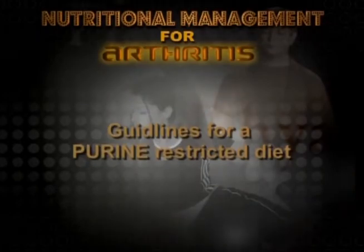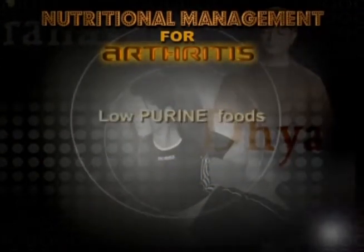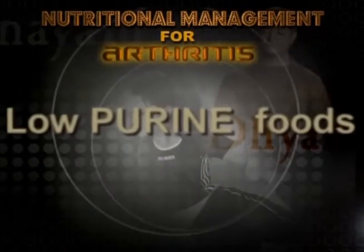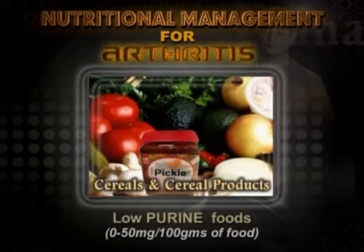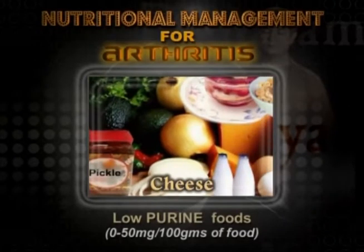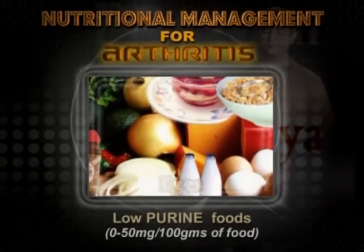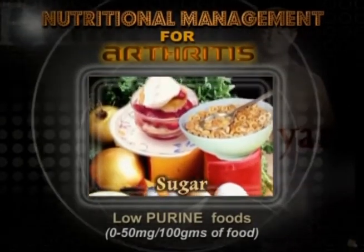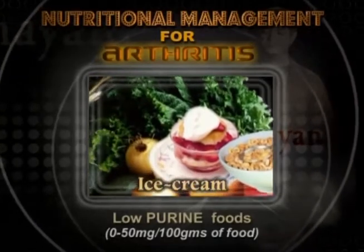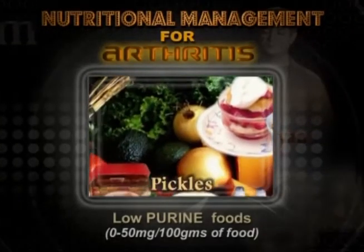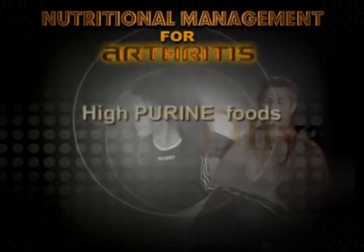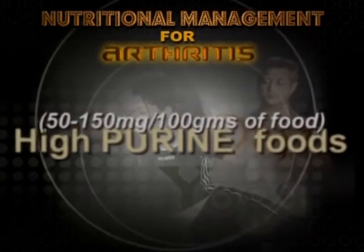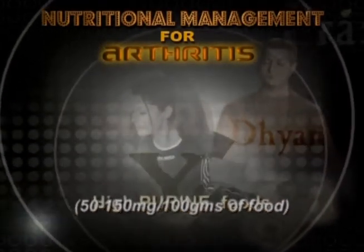Guidelines for a Purine Restricted Diet. Low Purine Foods (0–50 milligrams per 100 grams of food): fruits, vegetables, cereals and cereal products, milk, cheese, eggs, nuts, pasta products, sugar, chocolates, ice cream, carbonated beverages, pickles, vinegar, and condiments. High Purine Foods (50–150 milligrams per 100 grams of food).